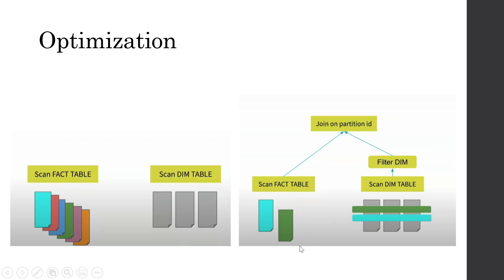This part of the query — doing a filter on the dimension table — is easier because the data is smaller. We do a simple filter push down: instead of doing a scan and then a filter, we reverse the order and do a filter first, then scan. That is the data we are interested in to pick up from the fact table as well. So we do not want to read all partitions — we want to read only those two specific partitions from the fact table. This is the optimization we are interested in.